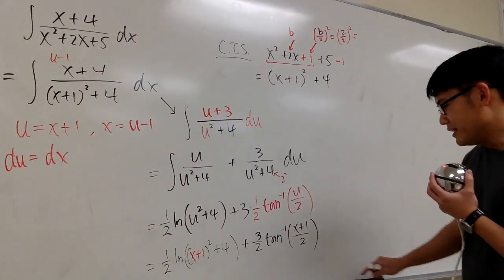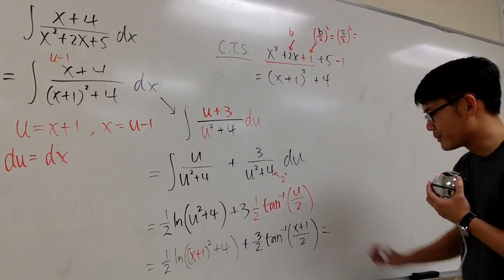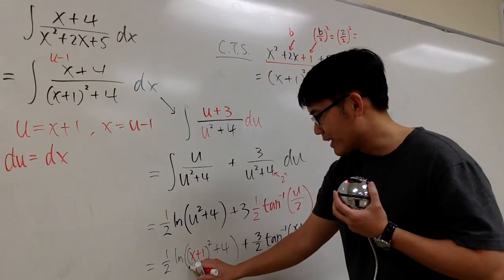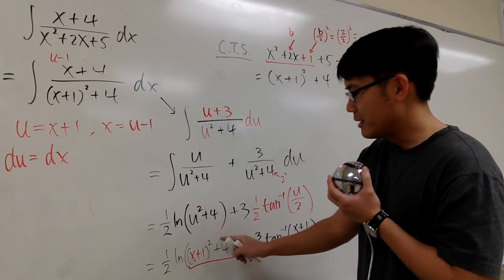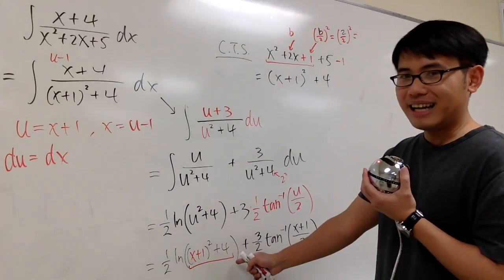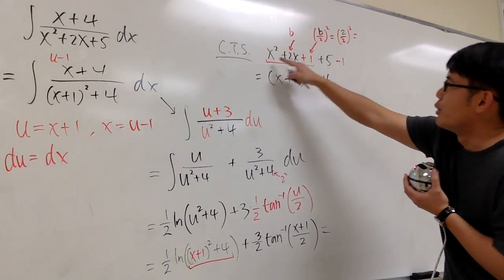In the answer in the back of the book, they decide to multiply this out, x squared plus 1 plus 4. But what's that? That is the same as the original.